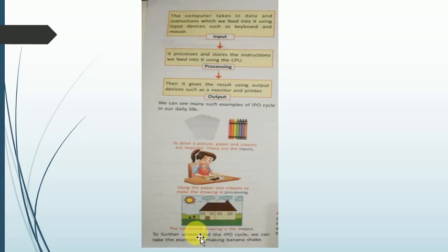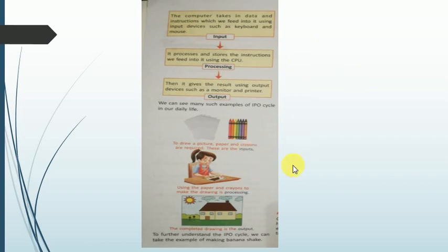Another example of the IPO cycle is a banana shake. You take bananas, milk, and sugar — that is input. You mix them all in a mixer or juicer — that is processing. Finally, you get the banana shake — that is the output. This is the whole IPO cycle.